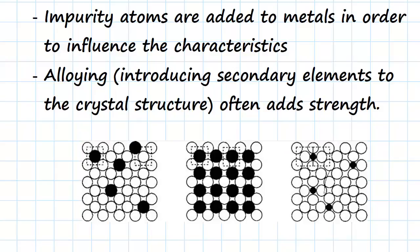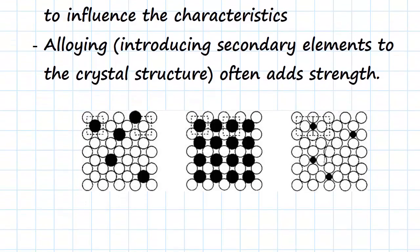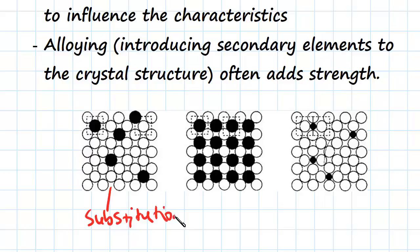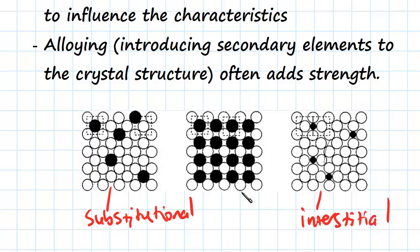Alloying, or creating a solid solution, means adding a second type of element to a crystal structure. We can see here a diagram with three different types. Here we have substitutional — a substitutional solid solution — and here we have interstitial. This one is also substitutional, just showing the different balances we can have in terms of intensity.